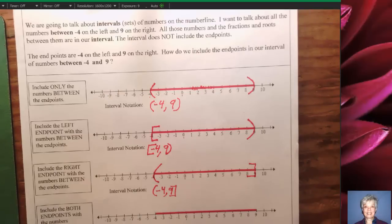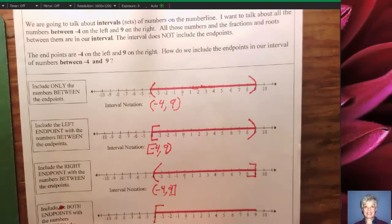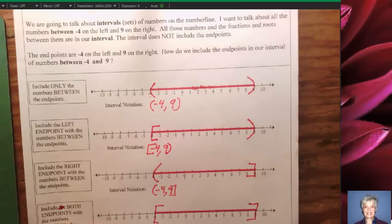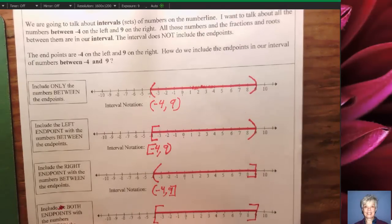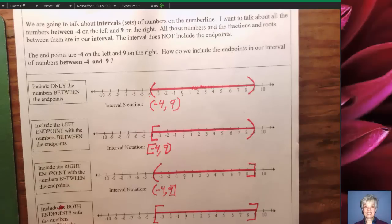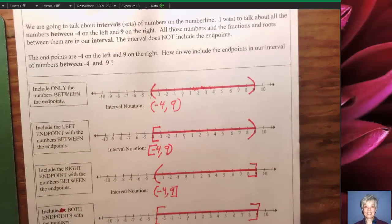Finally, one more: include both end points with the numbers between them. For that, I'm going to use two brackets — one at negative 4 and one at positive 9. The interval notation will be bracket, bracket, with the end points and a comma between them — written as [-4, 9]. Those are the four possibilities for what's called a closed interval. In a few minutes, you'll see open intervals. Talk to you later.